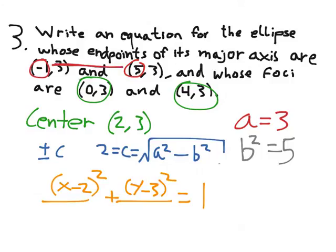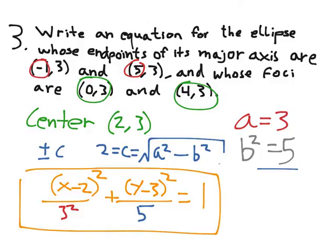Well up here, the major axis only changes with x's. The y stays the same, y is always 3. That means the major axis goes along the x axis. So x is where my a belongs. So here's my 3 squared. And for y's, I have to have b squared. We already know b squared is 5, so I'm just going to put 5. And that is the answer.